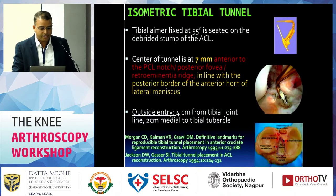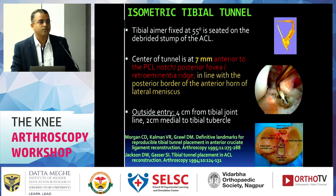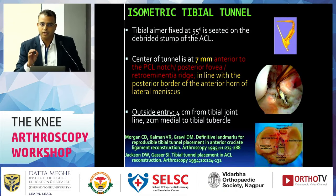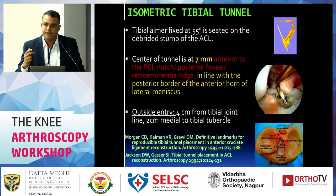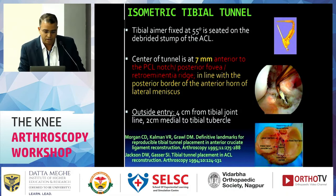For the tibia, what is the ideal point? Viewing from inside the joint, the tibial guide should be fixed at 55 degrees, seated on the debridement stump of the ACL. Even after completing this lecture, the most important thing is to take the entry point at the anatomical site, because every knee is different and no bony landmarks can define the exact position of the tibial or femoral tunnel.